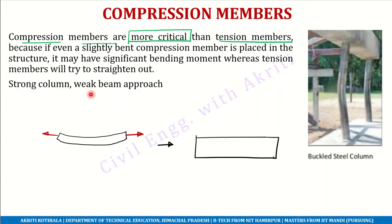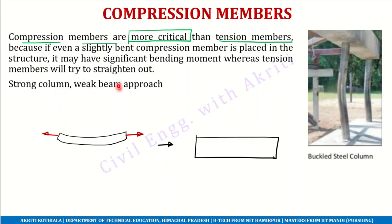We use the concept of strong column and weak beam. If your column and beam strength are compared, you should always provide more strength to the column, because the column supports the floor, and if the beam fails it will be a localized failure.